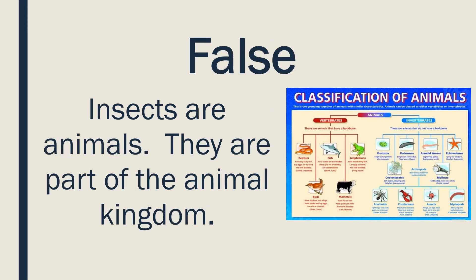That is false. Insects are animals — they are part of the animal kingdom. I'm going to use my pen to show you on the chart. You can see insects listed right here. Actually, that category next to it is for spiders, which are arachnids — not technically insects — but insects are right there on the chart.